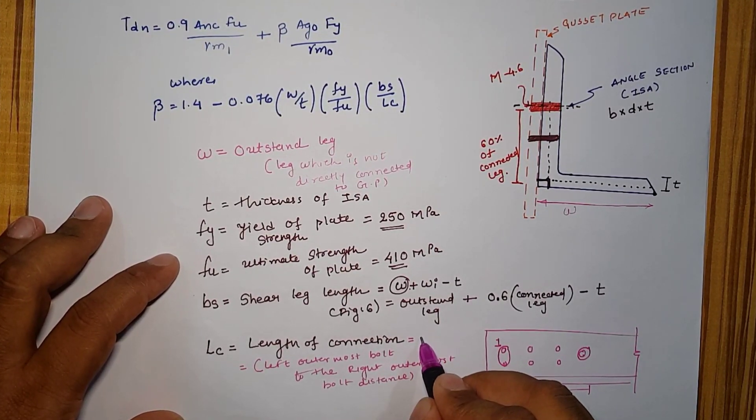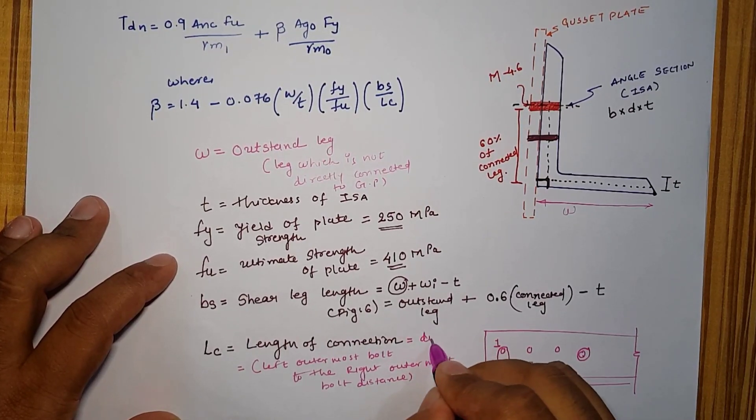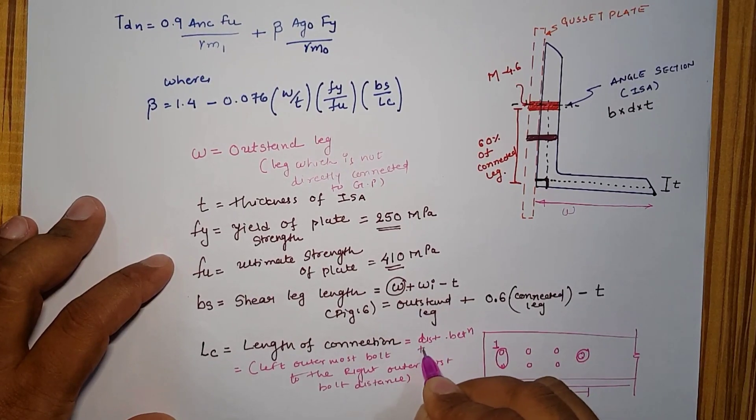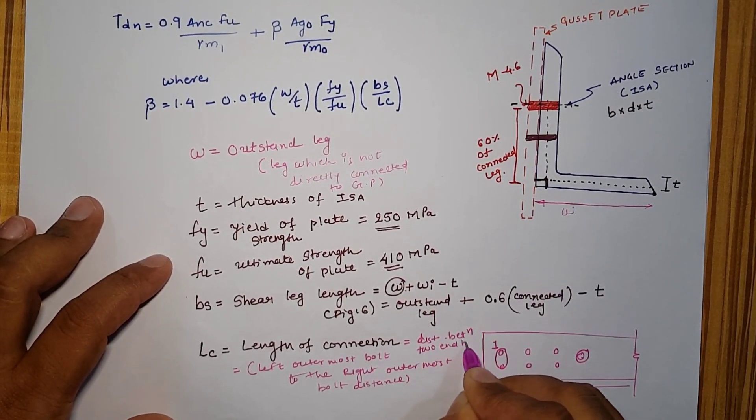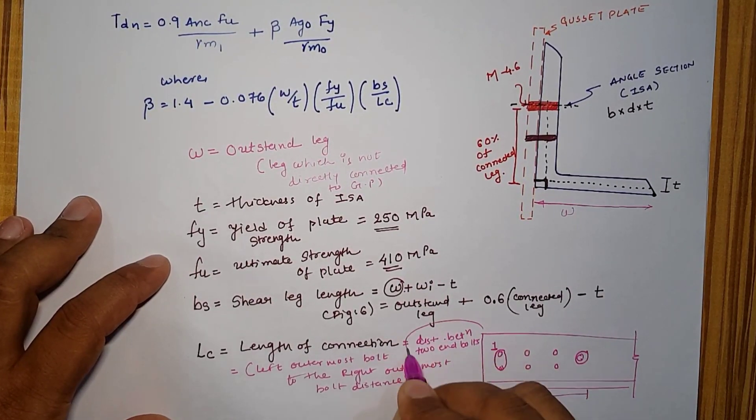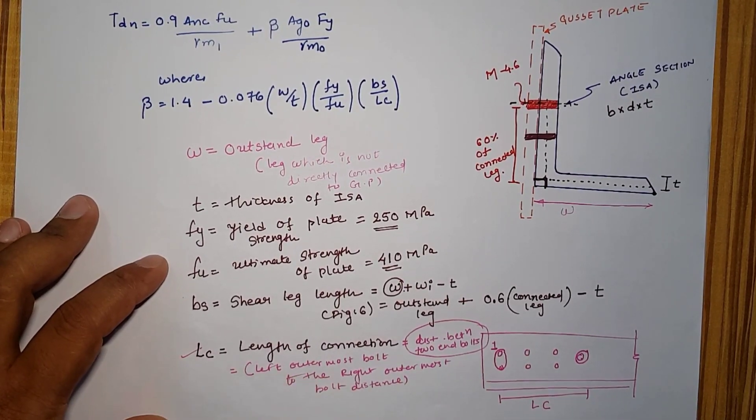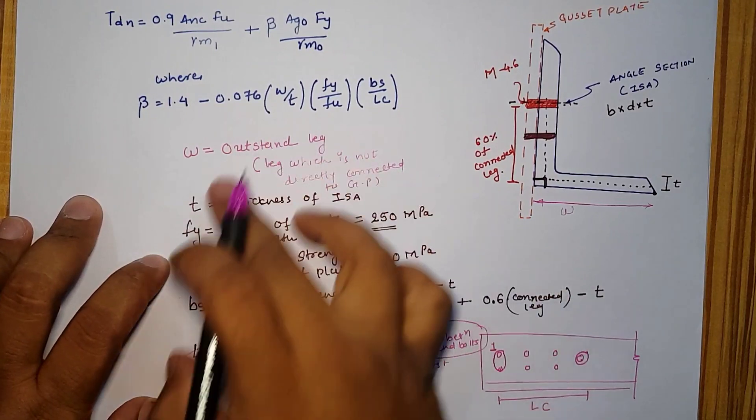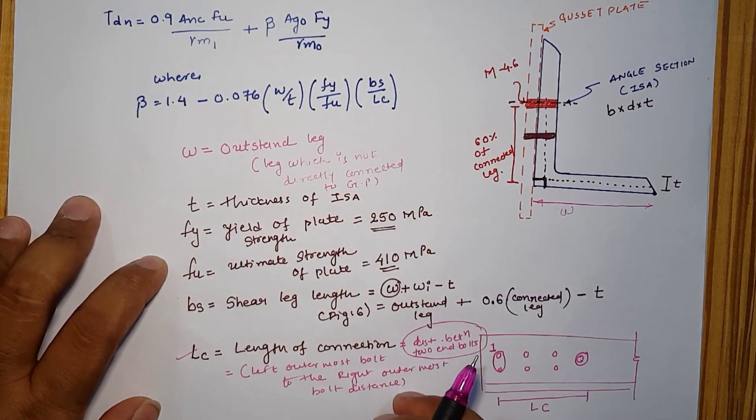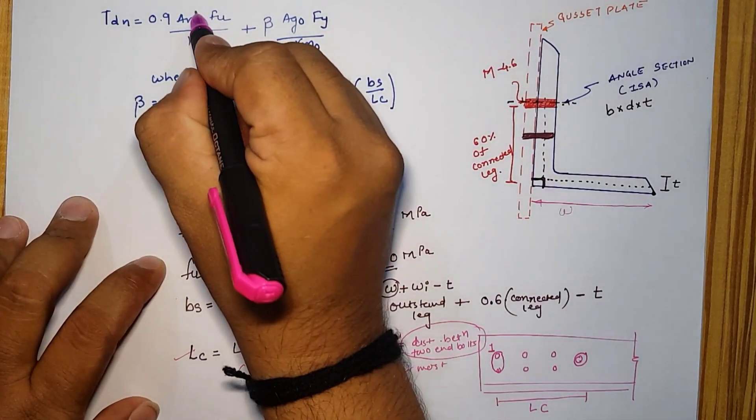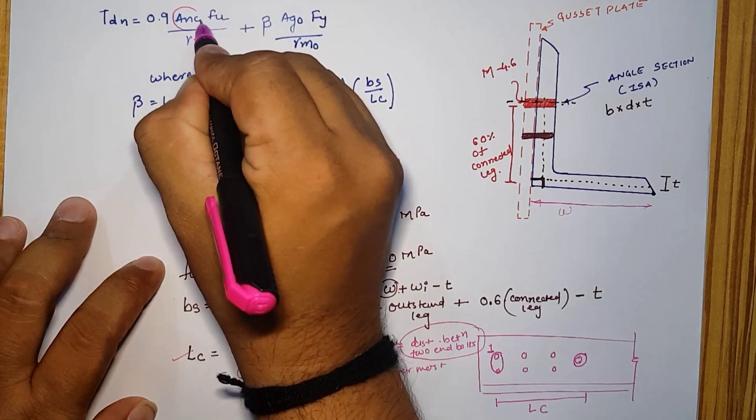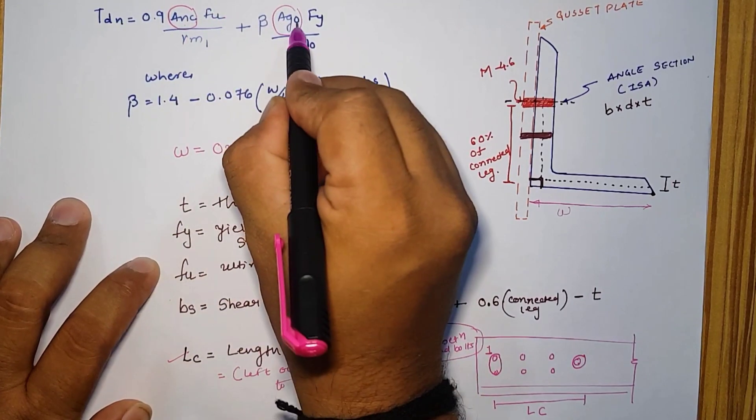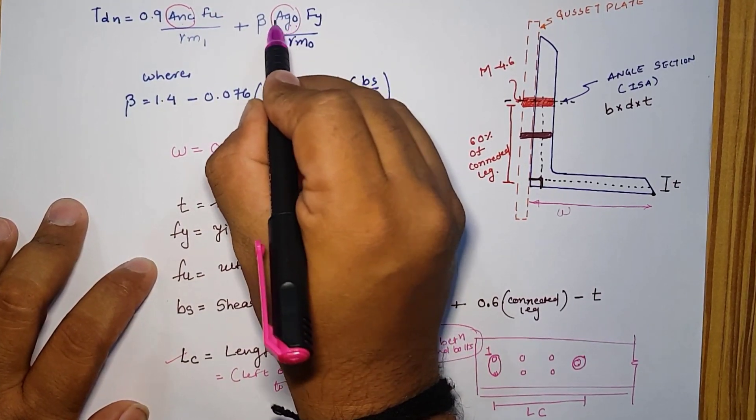The distance between 2 end bolts is known as LC. Thus the equation for beta is calculated using this terminology. The rest part is ANC and AGO means the net connected area and gross outside area.